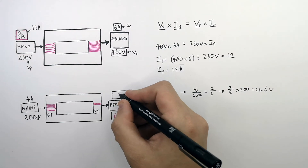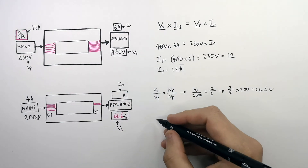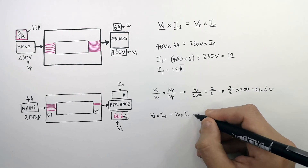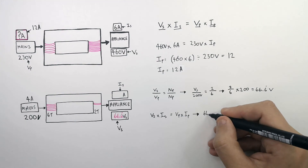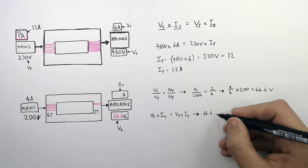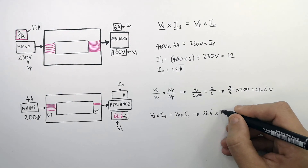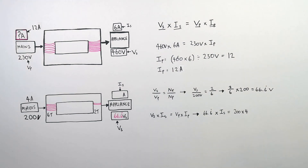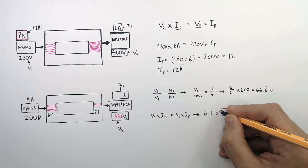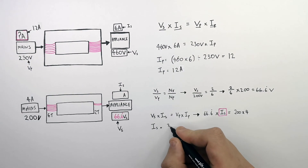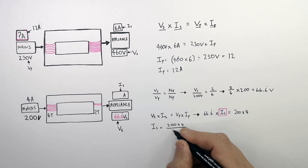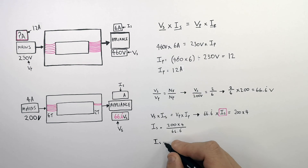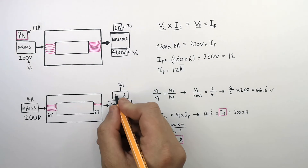To find the current in the secondary coil, we recall the equation VS times IS equals VP times IP. Substituting: 66.6 volts times IS equals 200 volts times 4 amps. Rearranging for IS, the current in the secondary coil: IS equals 200 times 4 divided by 66.66 recurring, which equals 12 amps.